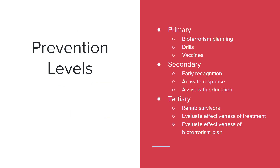Since community health is all about prevention, there are three prevention levels for bioterrorism. Primary prevention involves the nurse participating in bioterrorism planning, drills, and vaccines. Secondary prevention is early recognition of bioterrorism, activating the response, and assisting with education. Tertiary prevention involves rehabbing survivors, evaluating the effectiveness of treatment, and evaluating the effectiveness of the bioterrorism plan itself.